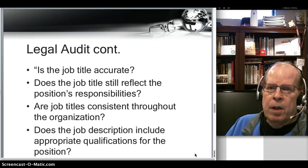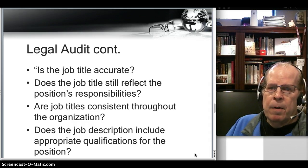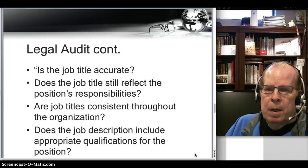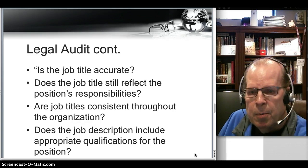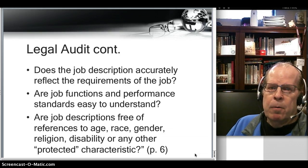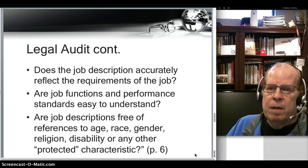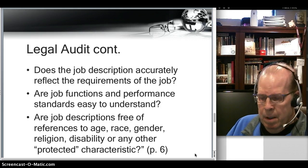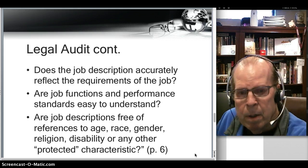In auditing a job description: is the job title accurate? Does the job title still reflect the position's responsibilities — in other words, is it current? Are job titles consistent throughout the organization? Does the job description include appropriate qualifications for the position? Does the job description accurately reflect the requirements of the job? Are the job functions and performance standards easy to understand? And are they free of references to age, race, gender, religion, disability, or any other protected characteristic? That's an important consideration.